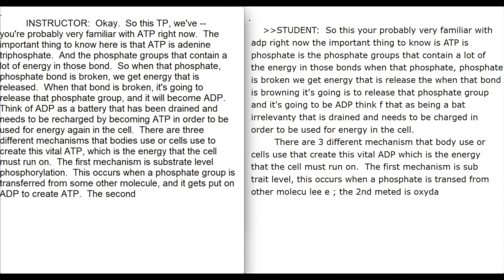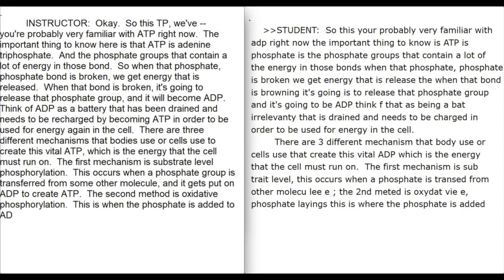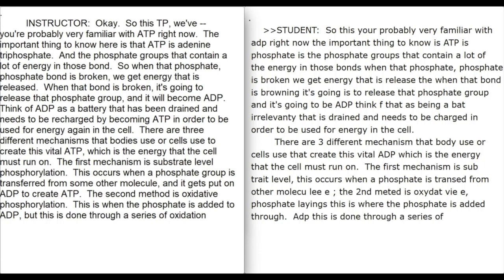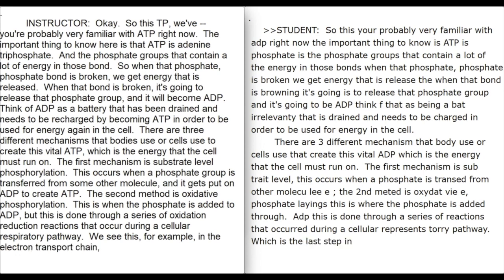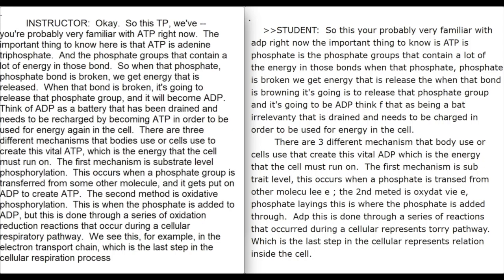The second method is oxidative phosphorylation. This is when the phosphate is added to ADP through a series of oxidation-reduction reactions that occur during a cellular respiratory pathway. We see this, for example, in the electron transport chain, which is the last step in the cellular respiration process inside the cell.